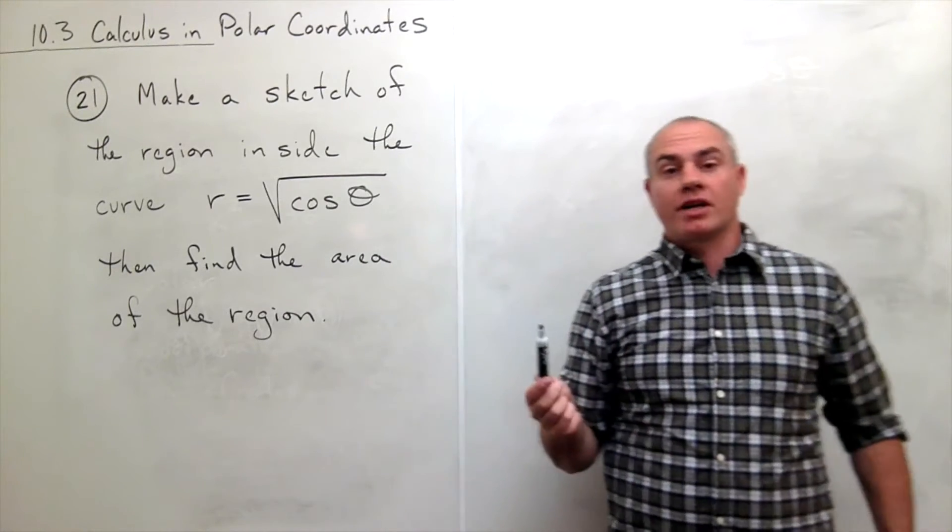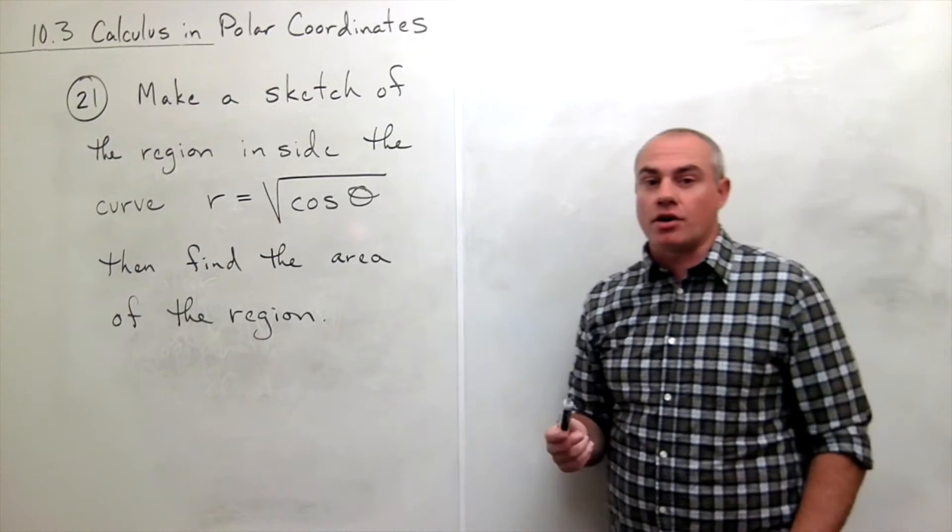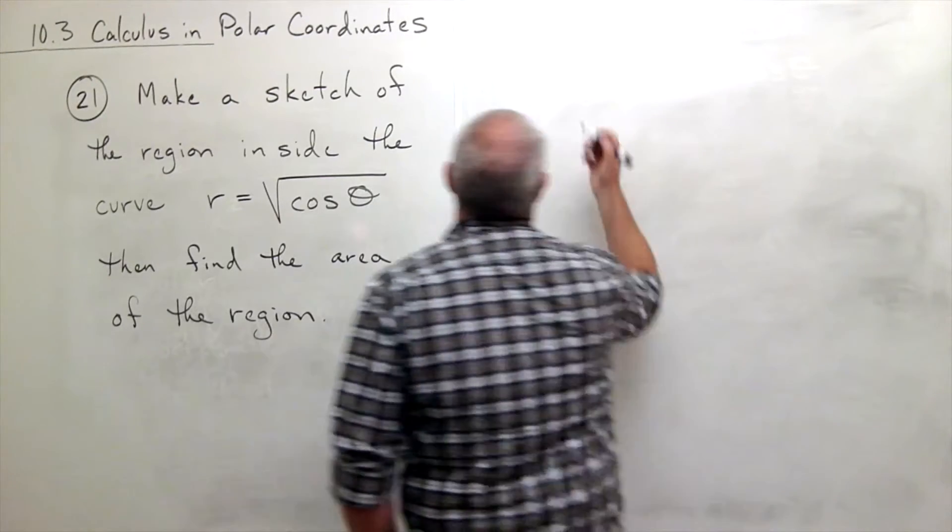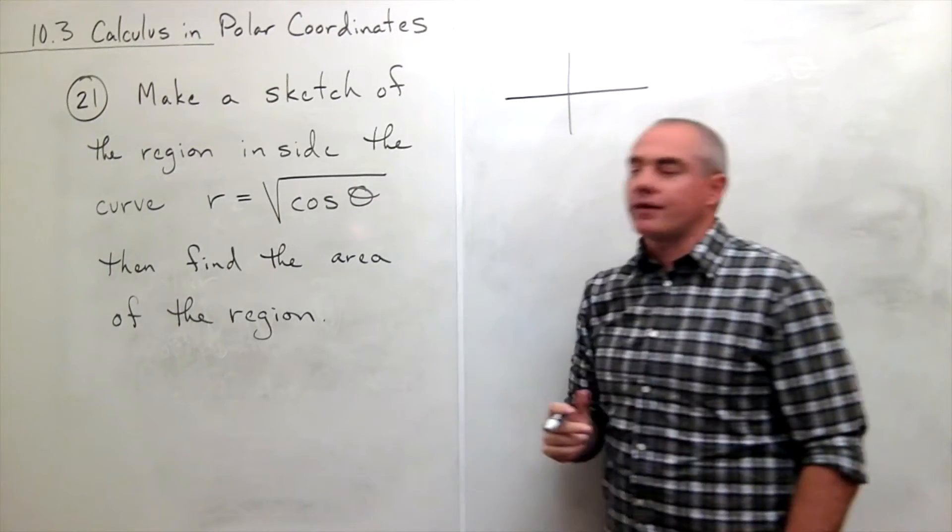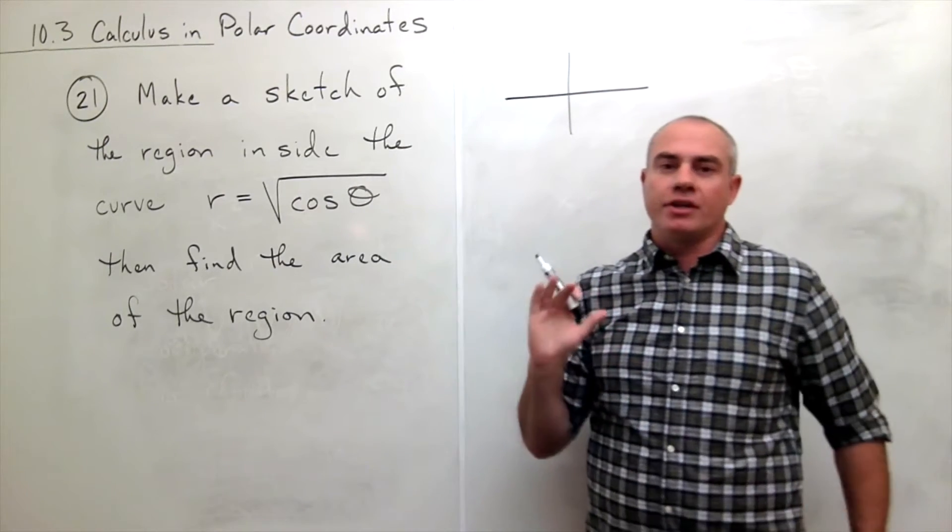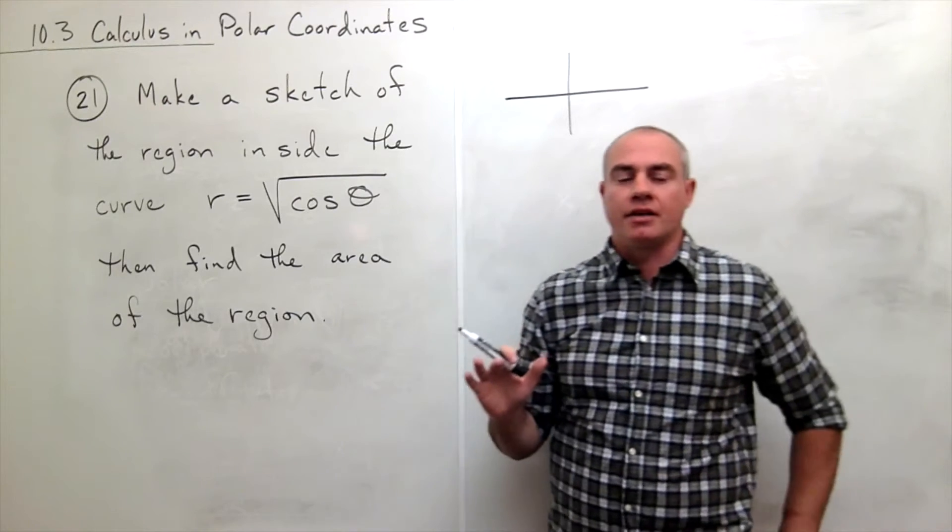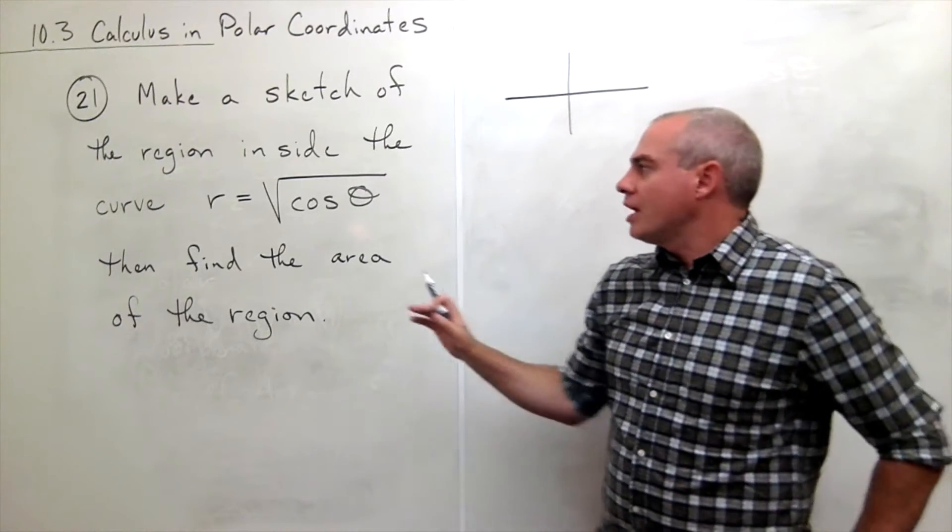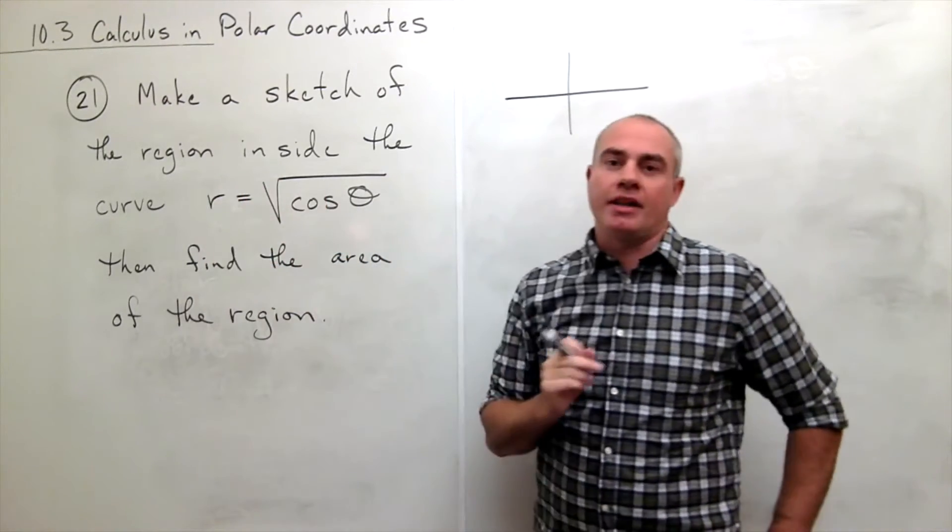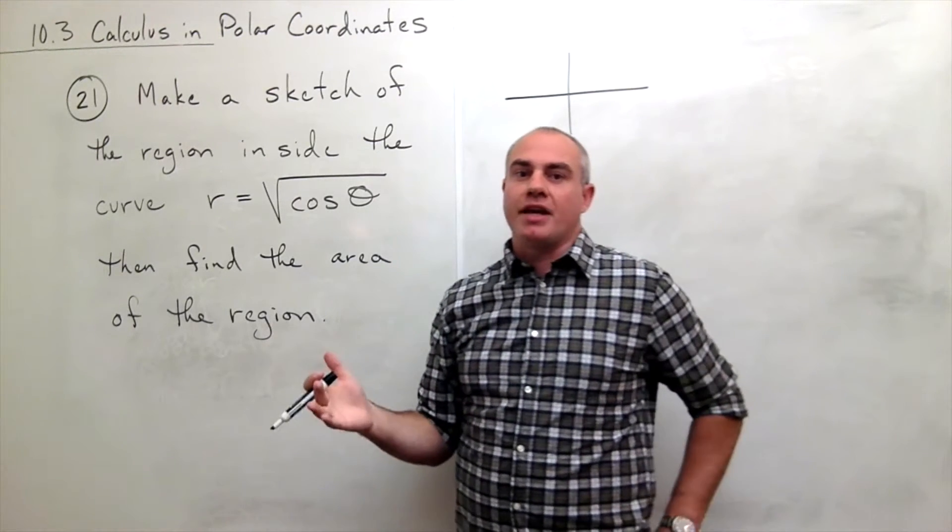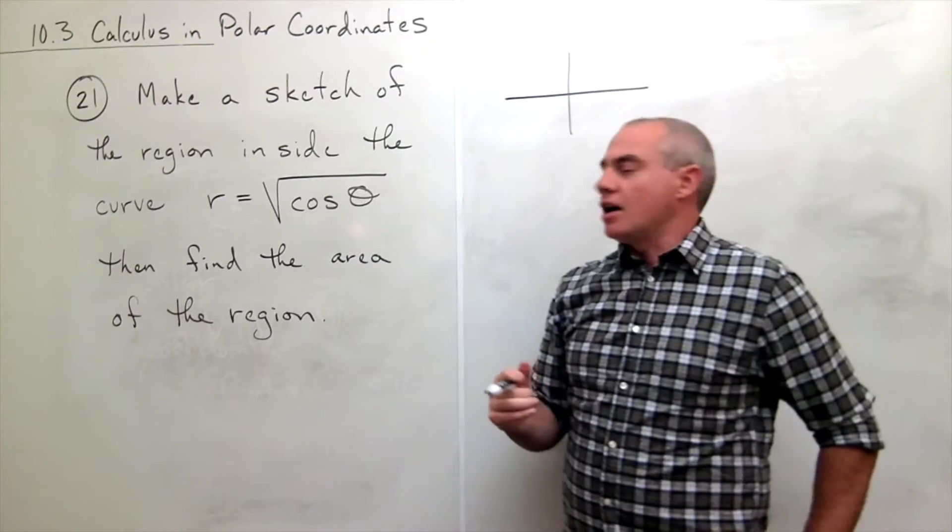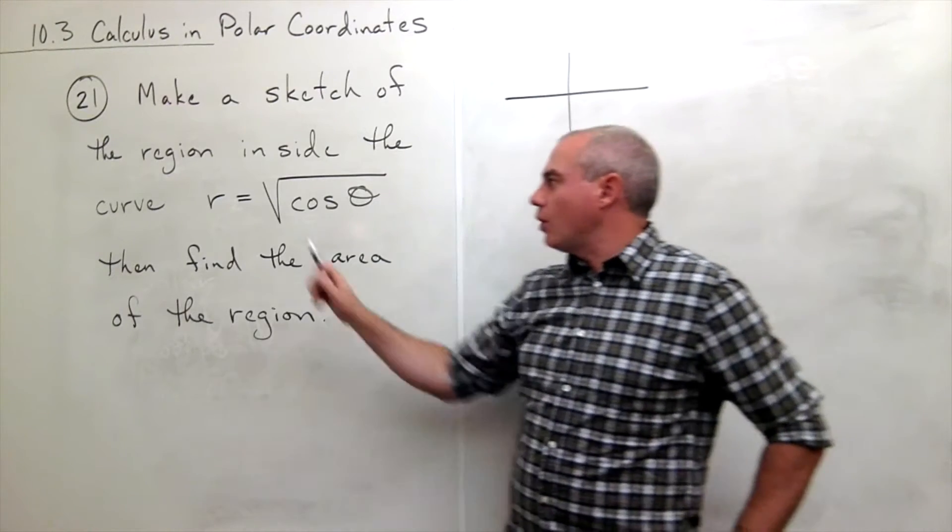Alright, so we're going to start out by just drawing this curve. There are a couple different ways of drawing a polar curve, but I'm going to keep this fairly simple. I'm not going to make a t-chart—that's one way we could go about it, just plugging in some thetas and r's—but what I am going to do is say, well, if the square root were not there,